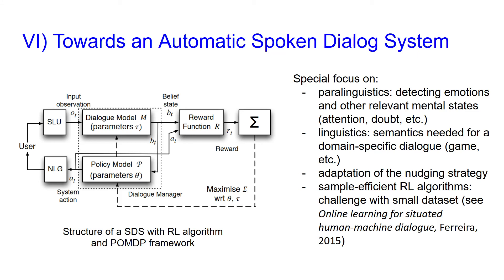The next step of this project is to build an automated dialogue system. We show how a spoken dialogue system with a reinforcement learning algorithm would be structured. Our system will have a special focus on paralinguistics such as detecting emotions and other relevant mental states, an adaptation of the nudging strategy, and a sample-efficient reinforcement learning algorithm, as we intend to work with a small dataset.